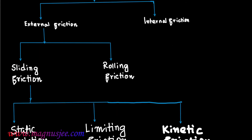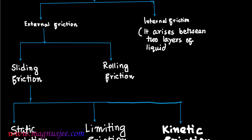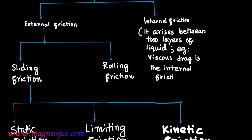Now, internal friction. Internal friction arises between the two layers of liquid due to their relative motion. An example of internal friction is viscous drag. Viscous drag is an internal friction which acts between the layers of liquid.